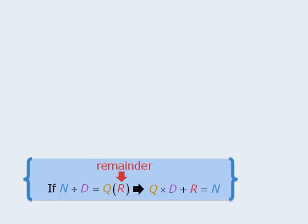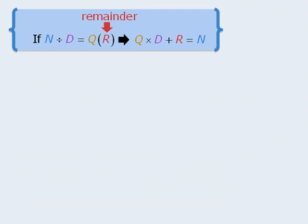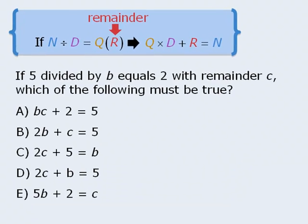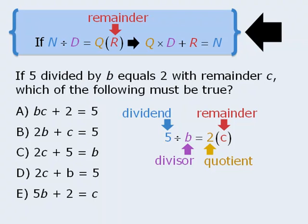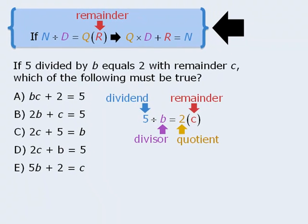Let's now take this rule and use it to answer a question you might see on test day. You might want to pause the video now and try the question before continuing. Okay, the question tells us that when 5 is divided by b, the quotient is 2 and the remainder is c. From here, we can apply this rule to conclude that 2 times b plus c must equal 5, which means the answer here is b.